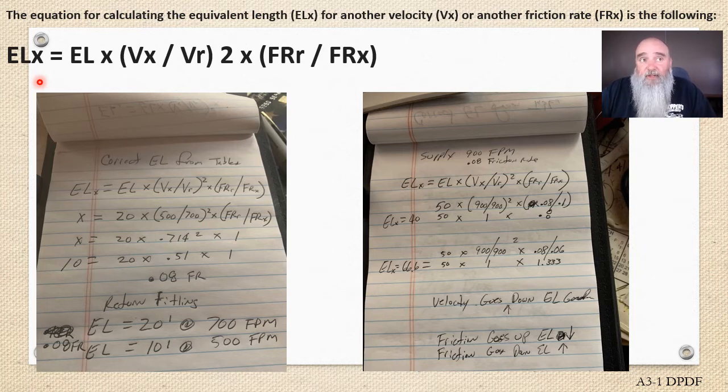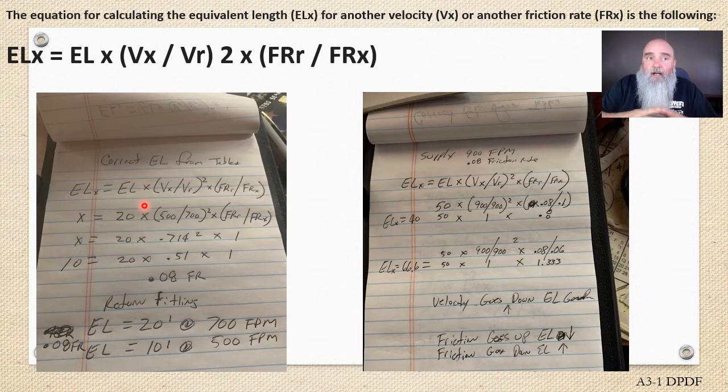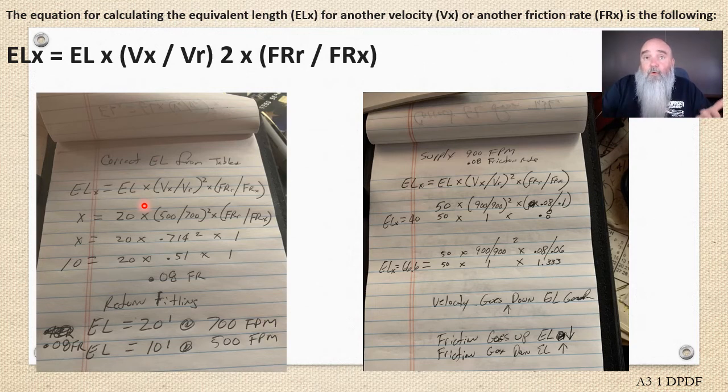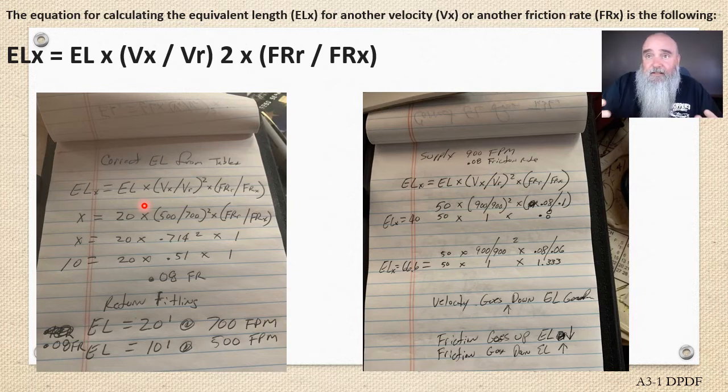And I think what you'll find is that when you adjust your velocity, and the most common thing we do on purpose—I would like to think—is run our air through our trunks at a lower velocity, which will allow us to enjoy a lower pressure drop or a lower EL. That can make it so we can use slightly smaller ductwork and we're still following the guidance of Manual D.